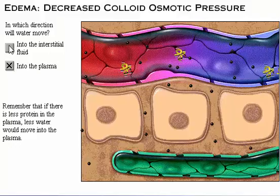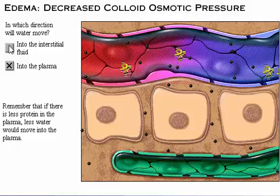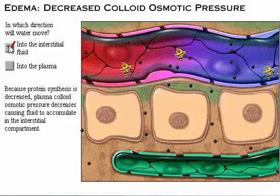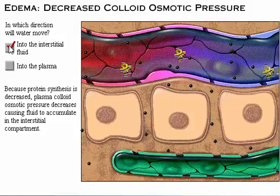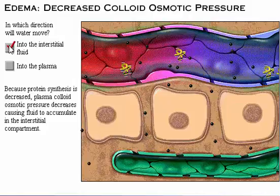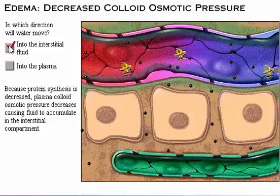Remember that if there is less protein in the plasma, less water would move into the plasma. Because protein synthesis is decreased, plasma colloid osmotic pressure decreases. While fluid moves out of the plasma into the interstitial compartment, less fluid moves into the plasma from the interstitial compartment, resulting in fluid accumulation in the interstitial compartment.